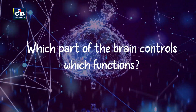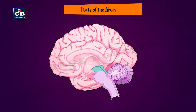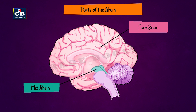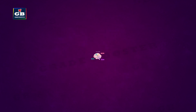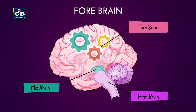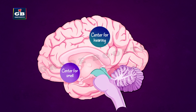Now let us see which part of the brain controls which functions. The brain has three main parts: the forebrain, the midbrain, and the hindbrain.